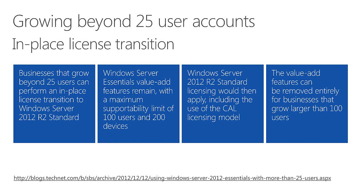You can do an in-place license transition — no reinstall required. Simply open a command prompt with elevated privileges and enter one single command that provides the product key for your copy of Windows Server Standard, hit return, reboot the server, and you transition your license to the Standard edition in-place. This puts you on the CAL model so you can have as many users as you want. Note that the maximum technical supportability limit for Essentials Experience features is 100 users and 200 devices — beyond that, the native management tools are more appropriate, as the dashboard is designed for smaller businesses.